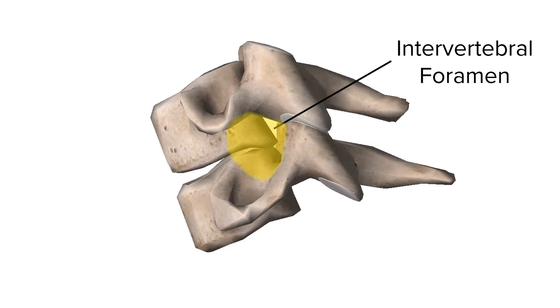Foramen means opening, hole, or a passage. And intervertebral means between two vertebra. So the intervertebral foramen is the specific space between two vertebra.